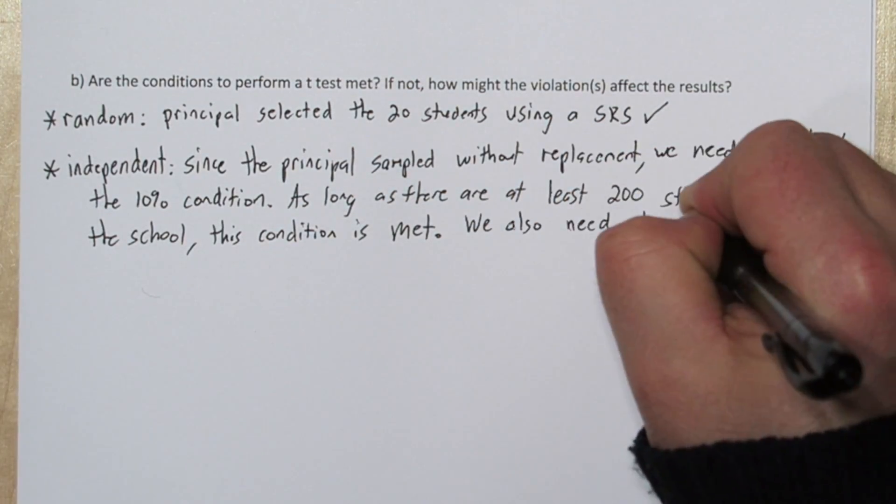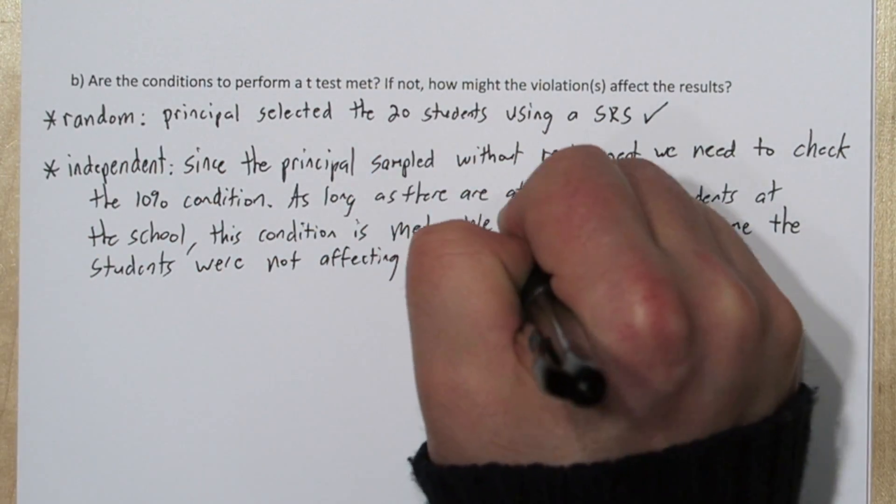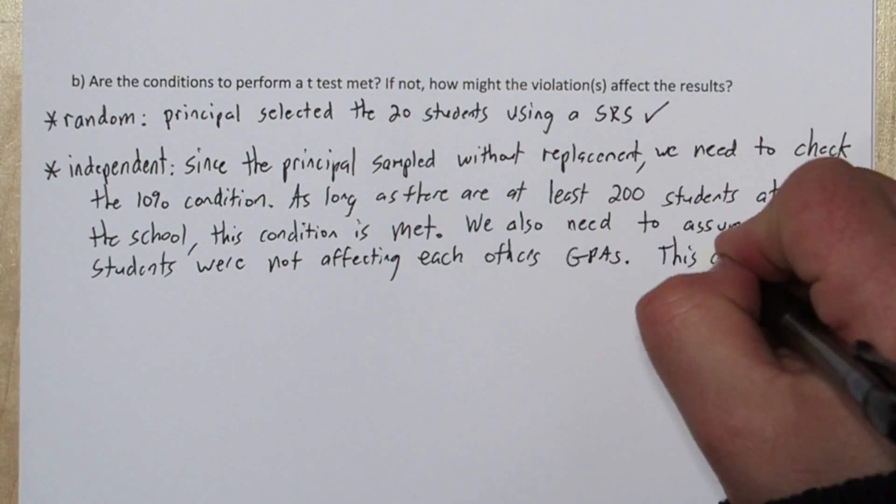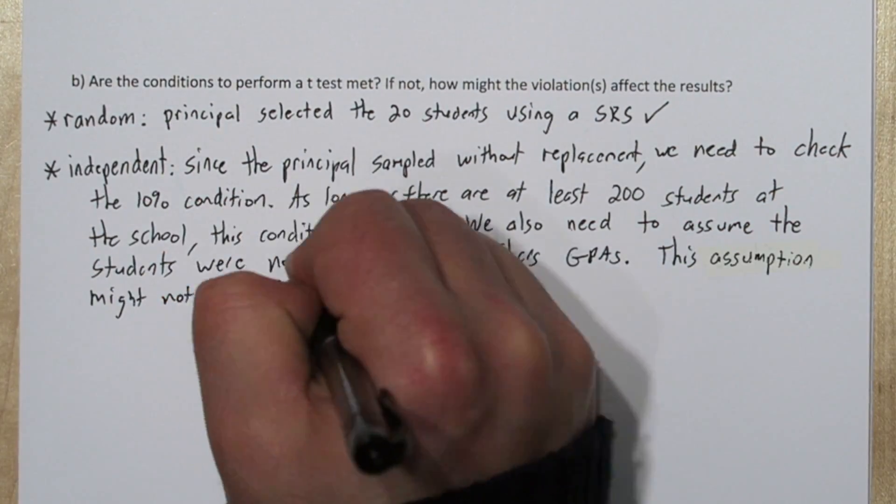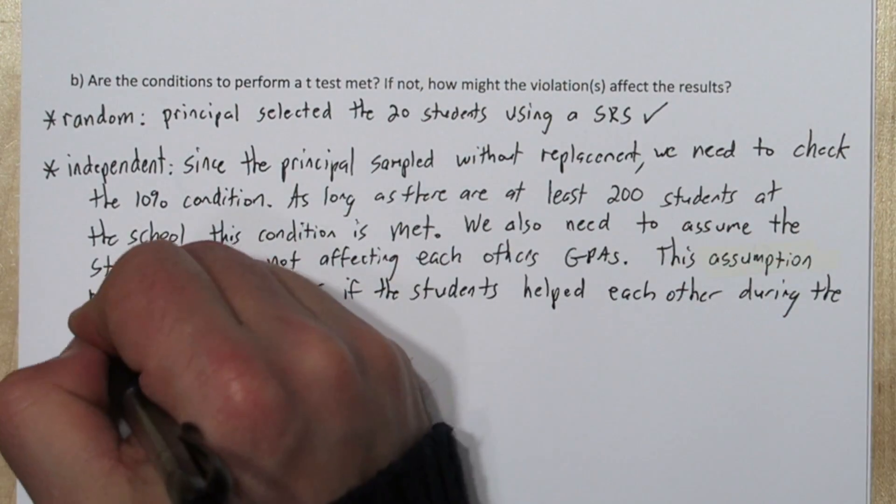But there's something else we need to check with independence. We have to assume that each of the students' GPAs are independent of each other. And if all these students are in the same room studying for an hour each day, and possibly helping each other, their GPAs might not be independent.